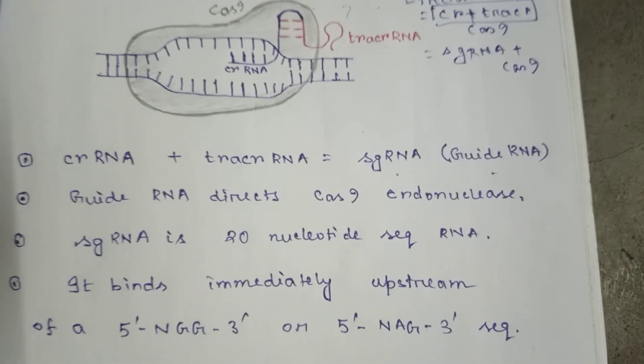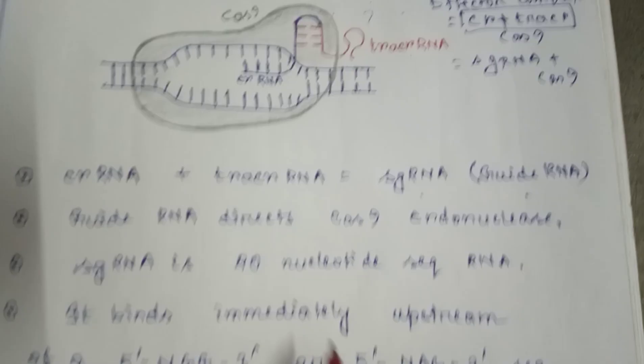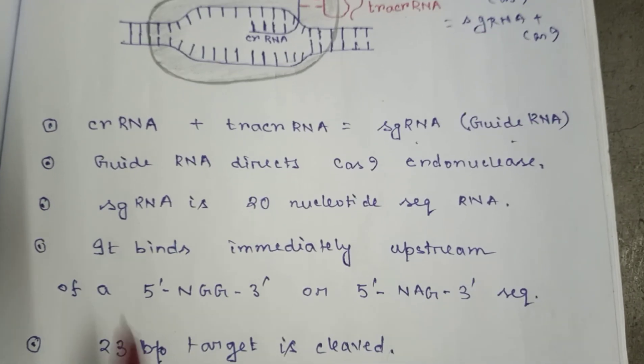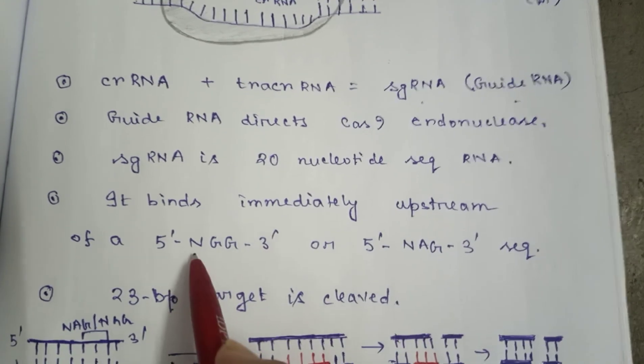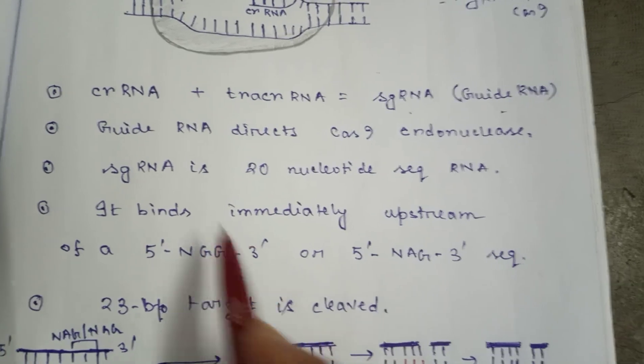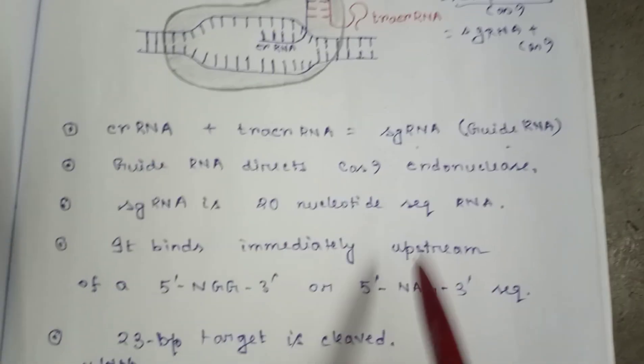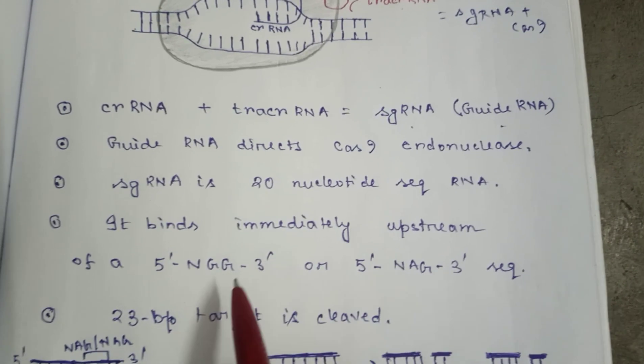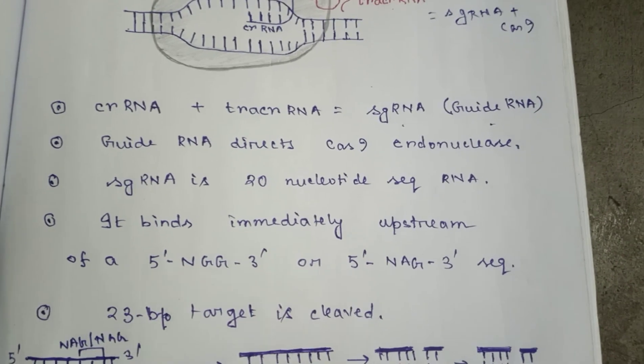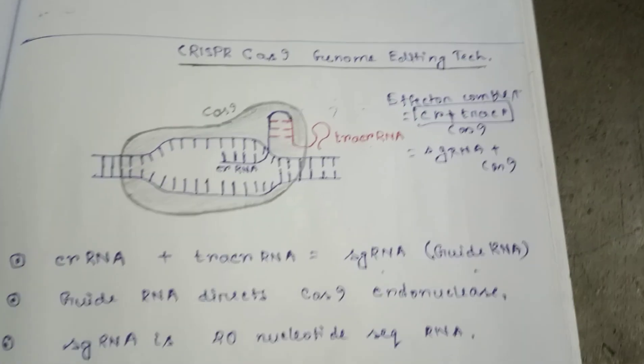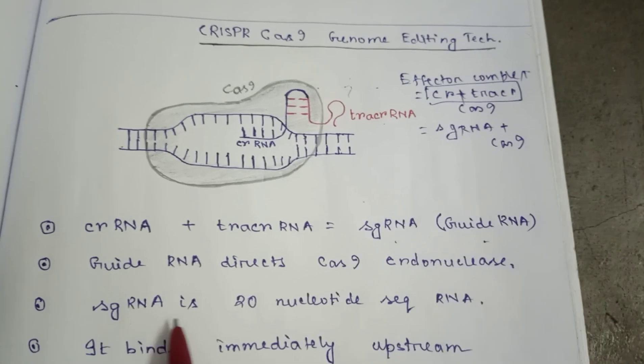What happens is this guide RNA actually detects... as I have written here, the Cas9 endonuclease actually binds upstream of the 5' NGG-3' or 5' NAG-3'. N means any nucleotide: A, U, G, or C. If the guide RNA can detect this sequence on the upstream of this 5' NGG, at that position Cas9 will snip it or cut it.